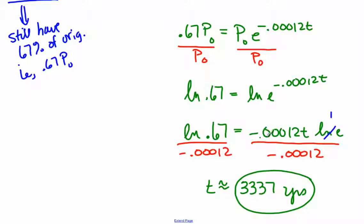So we have this ln of .67 equals negative .00012T, divided through by that coefficient, and we get approximately 3,337 years.